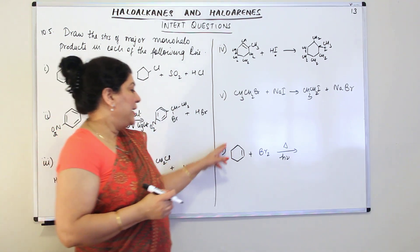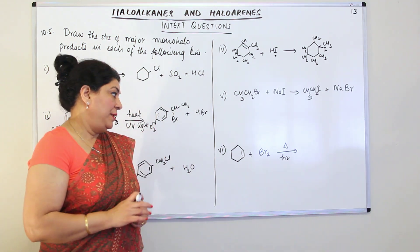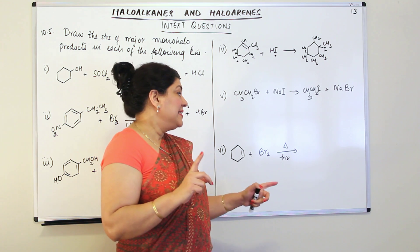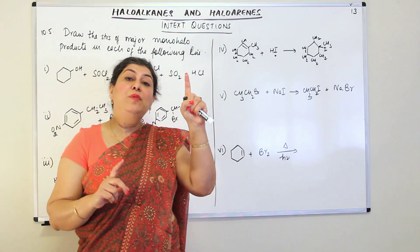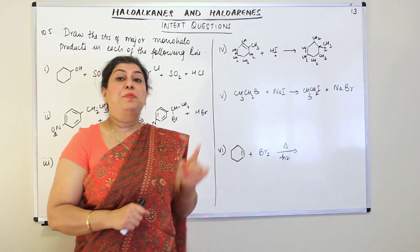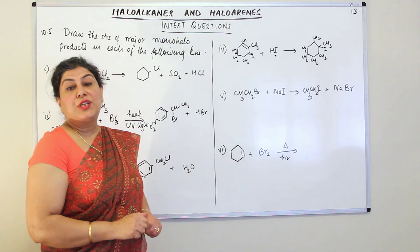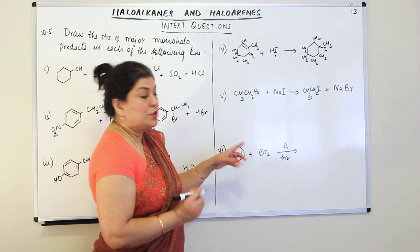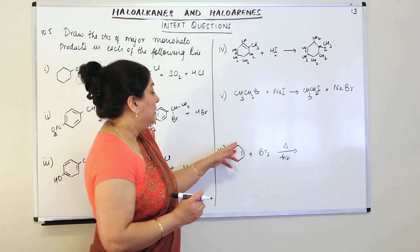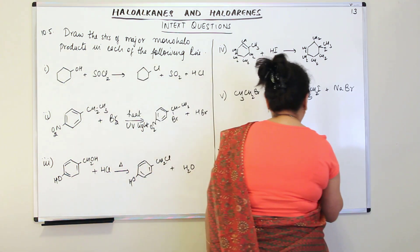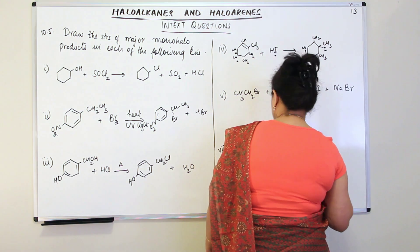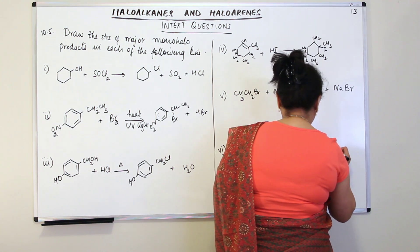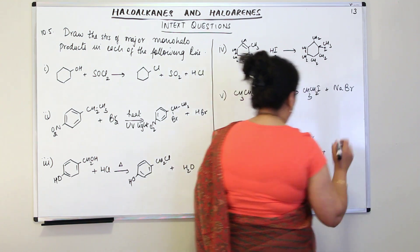The last part: cyclohexene reacting with bromine in the presence of heat and ultraviolet light. Whenever you have heat and UV light, the reaction takes place at the sp³-hybridized carbon, not the sp²-hybridized ones. The two carbons with the double bond are sp² hybridized, so substitution does not occur there. Instead, one hydrogen on the adjacent sp³ carbon is substituted with bromine by free radical substitution, giving HBr as a byproduct.